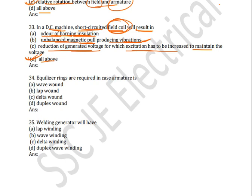Next question: equalizer rings are required in case of armature that is wave-wound, lap-wound, delta-wound, or duplex-wound — which is the correct answer? If you know the answer, just answer in comments. Equalizer rings are used for distribution of current at the brush for sparkless commutation. We use the equalizer ring in lap-wound generators.